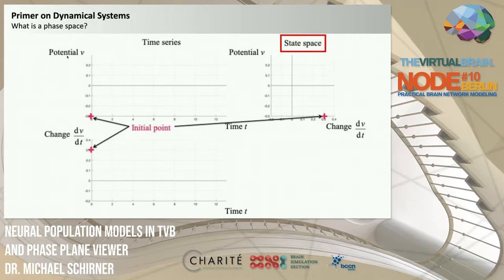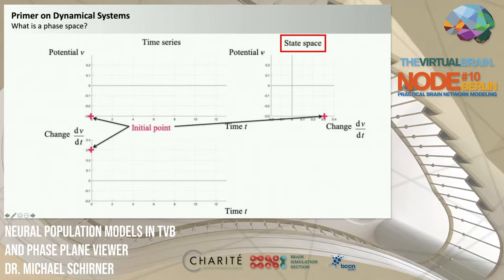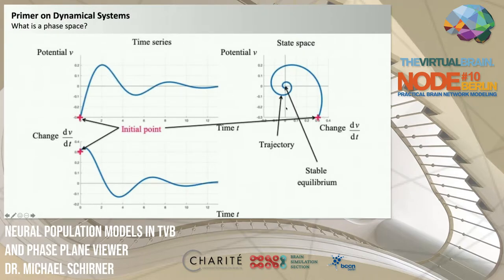Let's look at another representation: a state space representation that omits time, so no axis encodes time. Instead, both axes encode either the state variable or its change. Starting at an initial point of approximately -0.3 for the potential and +0.3 for its change, the time series maps in state space onto an inward-spiraling trajectory — called a trajectory in state space — approaching an equilibrium point, fixed point, or attractor.